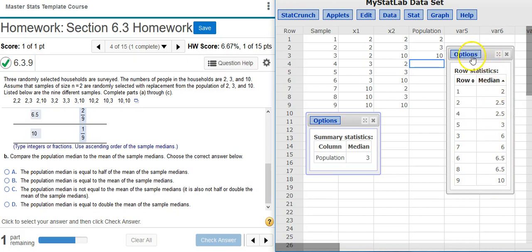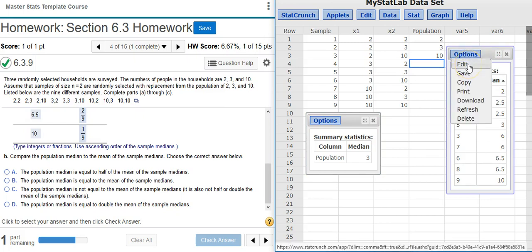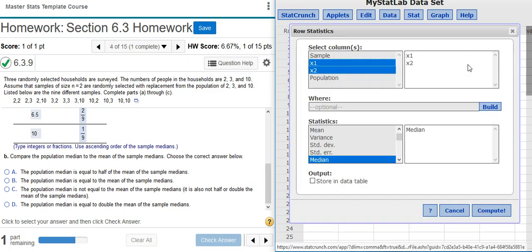Here in my Results window, if I push the Options button here at the top, and then in the drop-down menu, I select Edit, I go right back to my Options window. Then I can come down here to the bottom and click on this box for Store in Data Table.